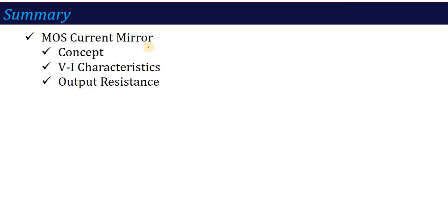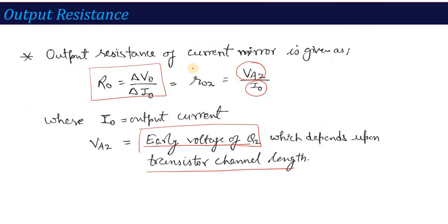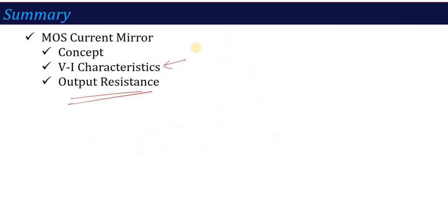I hope after learning this, you have built some concept about basic MOS current mirror. You can write about the VI characteristic — how the current varies and why it varies due to the output resistance, as when the output voltage increases the current also increases by this formula. If any of these topics appear in your exam, this should be sufficient. In the next lecture, we will study Wilson's MOS current mirror and the MOS steering circuit — where we route current to different locations — similar to what we studied with Wilson's BJT current mirror. Stay with me, see you in the next lecture. Thank you.